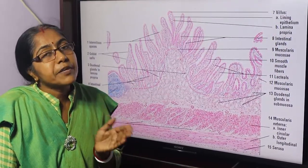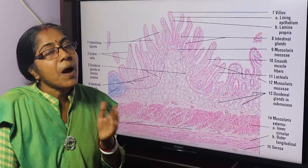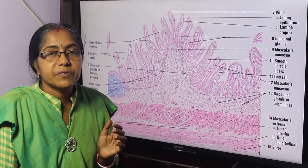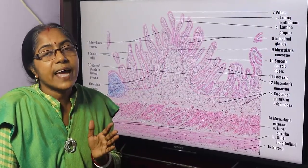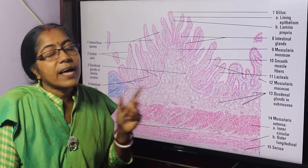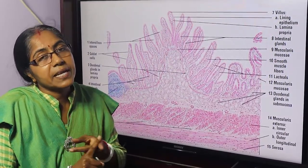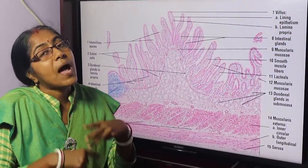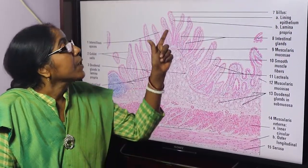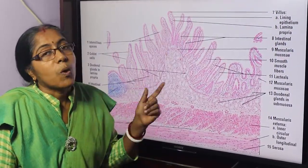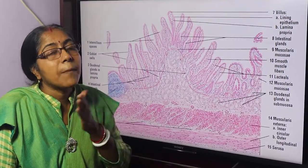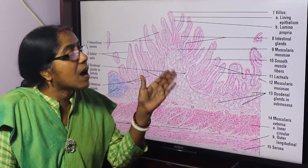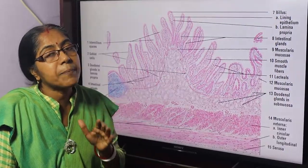These are the identifying points of the duodenum under the microscope. Throughout the GI tract, mucosa is composed of lining epithelium, lamina propria, and muscularis mucosa. The whole of the GI tract up to the pectinate line, from the lower end of the esophagus, is lined by simple columnar epithelium.